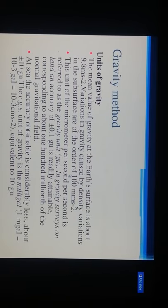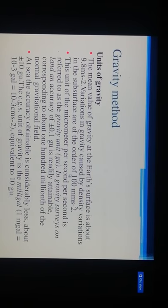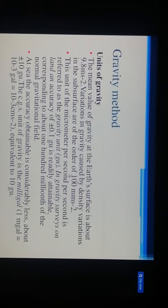Variations in gravity caused by density variations in the subsurface are of the order of 100 μm/s². This unit of micrometer per second squared is referred to as the gravity unit (GU). In gravity surveys on land, an accuracy of ±0.1 gravity unit is readily attainable, corresponding to about one hundred-millionth of the normal gravitational field.